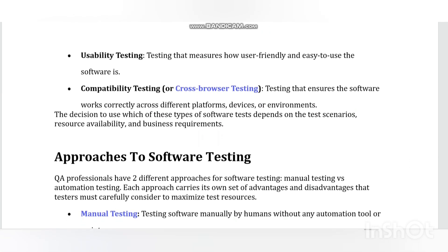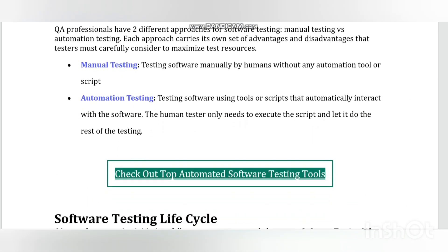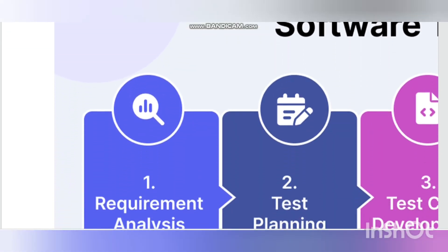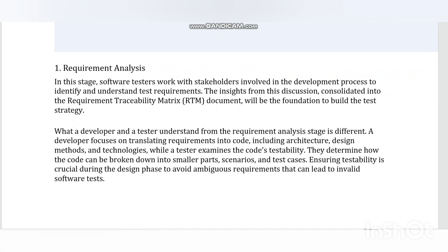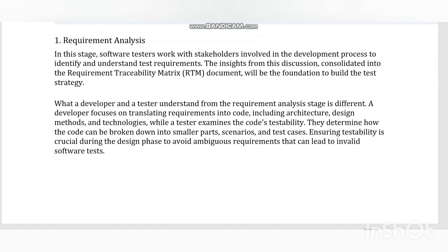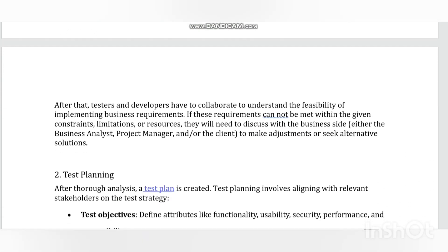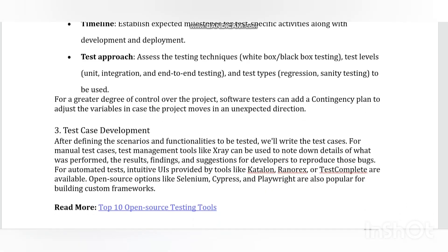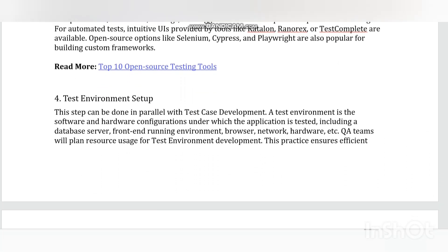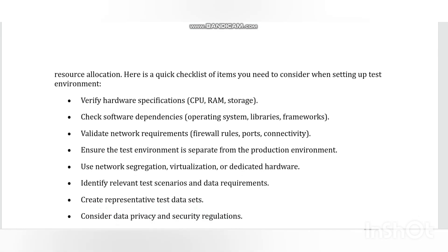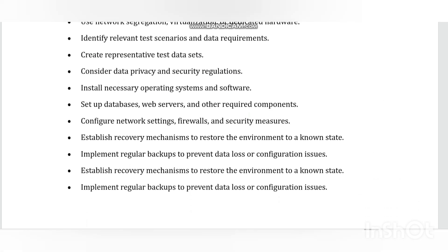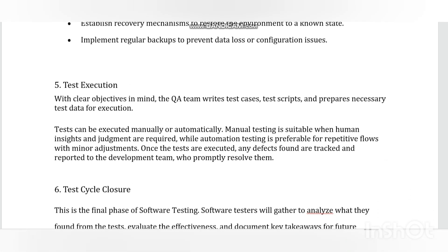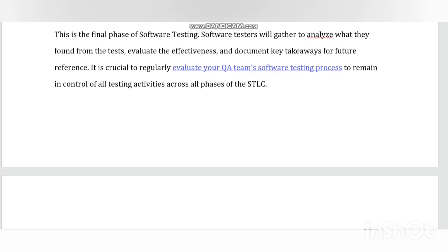But what if you work hard, take all precautions, and make your software 99% bug free, yet the software does not meet the needs and requirements of the clients? This leads to our next principle: absence of error is a fallacy. It is possible that software which is 99% bug free is still unusable — this can be the case if the system is tested thoroughly for the wrong requirement. Testing is not merely finding defects, but also checking that software addresses the business needs. Finding and fixing defects does not help if the system built is unusable and does not fulfill user needs and requirements.